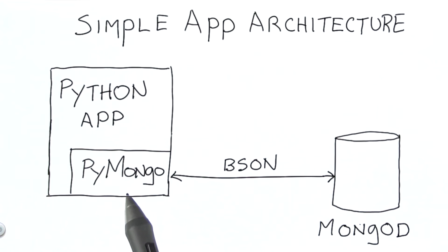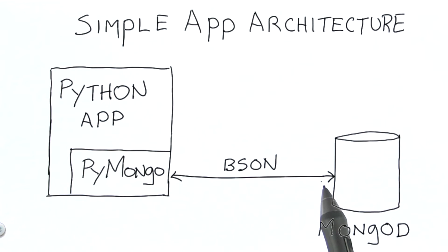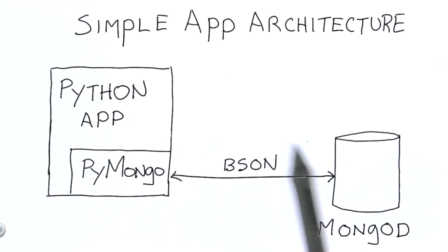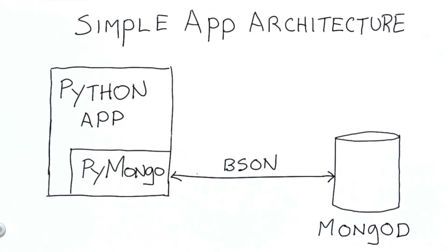PyMongo communicates with the database using what we call the wire protocol, and the data that's exchanged is in a format called BSON. BSON is a binary encoding for JSON. If you Google for BSON, you'll easily find the spec.